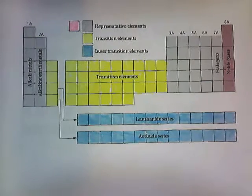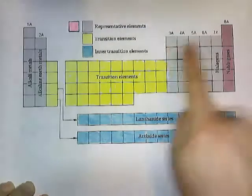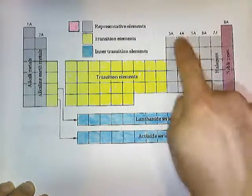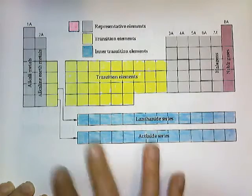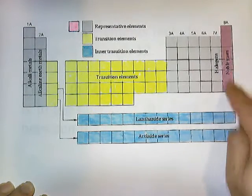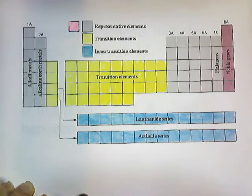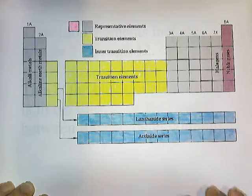Representative elements include groups 1, 2, and 13 through 18. These elements in this picture appear in gray, and the shaded pink or red is also a representative element. These groups are sometimes called the main group elements.